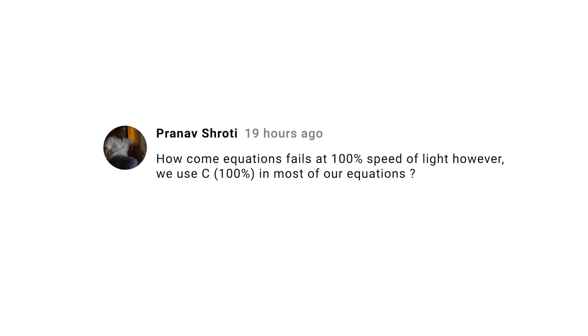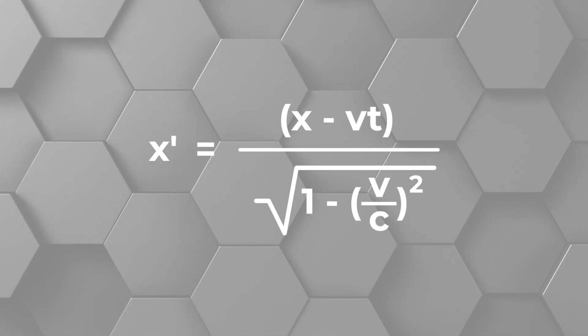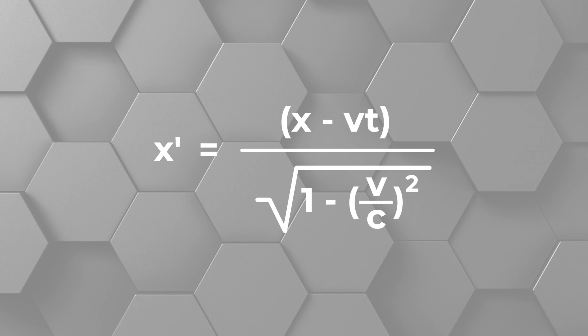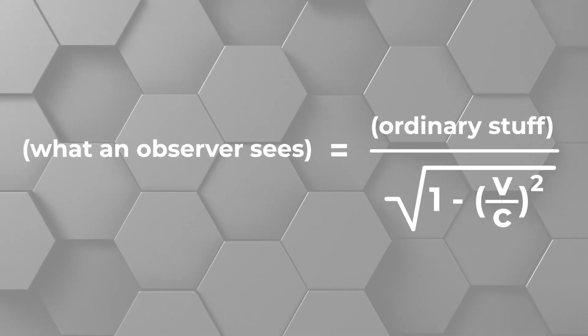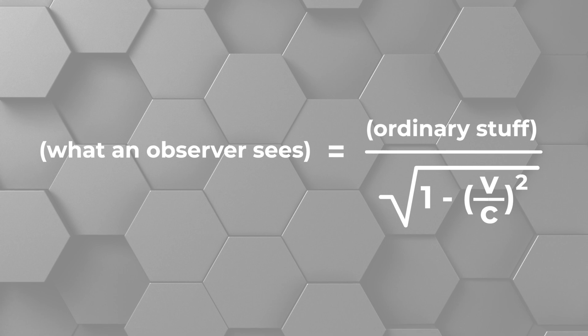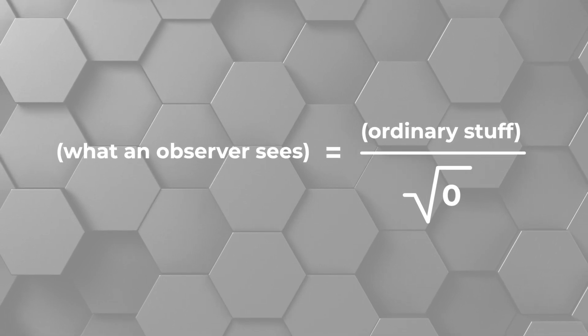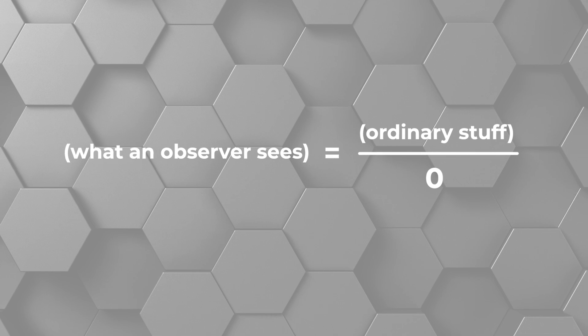Pranov Shroti asks how I can say that the equations of relativity fail at the speed of light, but we still use them. This is a math thing. Relativity simply takes what one observer measures and uses those values to predict what another observer will see. Essentially, all relativity equations have this basic structure: the prediction equals some ordinary stuff divided by a square root containing both the second person's velocity and the speed of light. If the second person is moving at the speed of light — which physicists write as c — we can put this in the equation and we see how that makes us divide by zero. Things fall apart when you divide by zero. The takeaway is that some equations of relativity apply for speeds lower than c, but they simply don't apply for velocities equal to c.